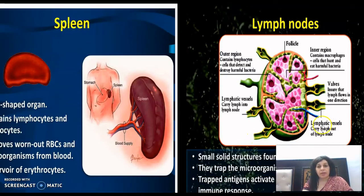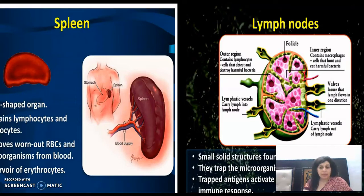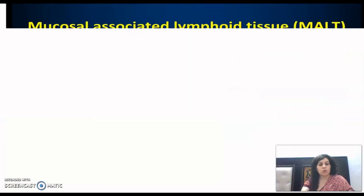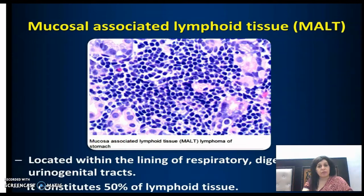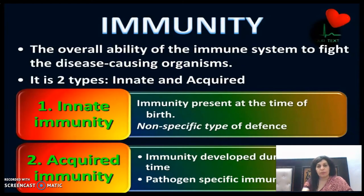Spleen एक secondary lymphoid organ है। Lymph nodes small solid structures होते हैं जो पूरे lymphatic system में present रहते हैं। इनका काम है microorganisms या दूसरे antigens को trap करना, और यह trapped antigens lymphocytes को activate करते हैं ताकि immune response हो। Respiratory, digestive, और urinogenital tracts की lining में lymphoid tissue होता है जो immunity में assist करता है।